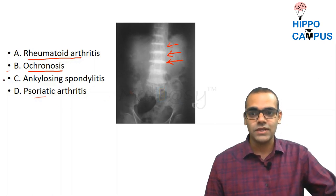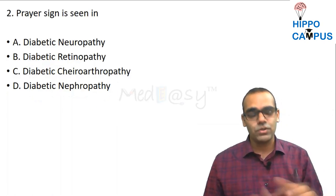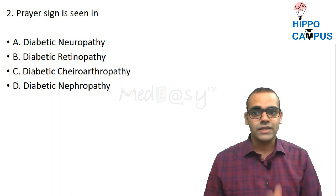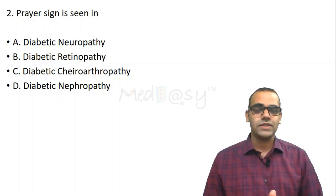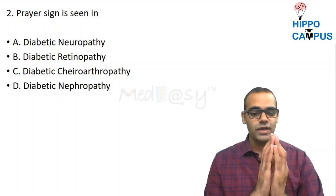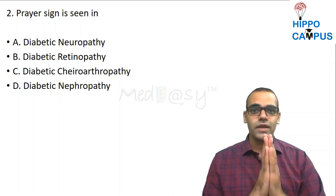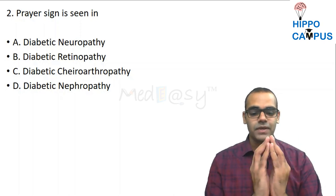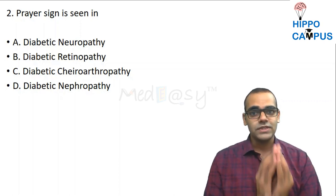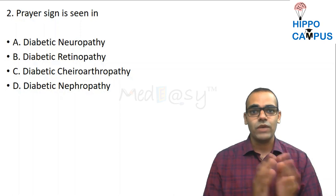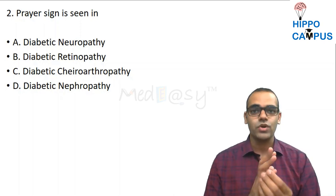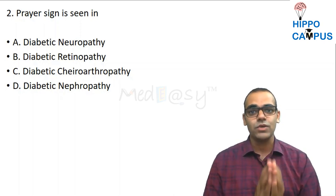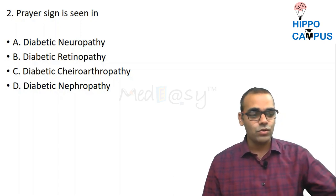Question 2: Prayer sign is seen in which condition — diabetic neuropathy, retinopathy, cheiropathy, or nephropathy? The prayer sign is when we ask the patient to join both hands in prayer. The patient will not be able to fully join the hands — there will be a gap between the hands. This is due to thickening of the skin and contracture of the hand joints, and it is seen in diabetic cheiropathy.